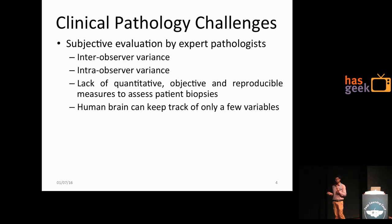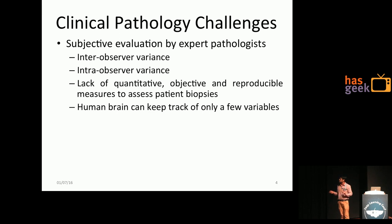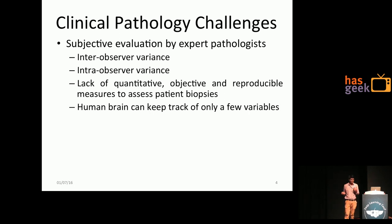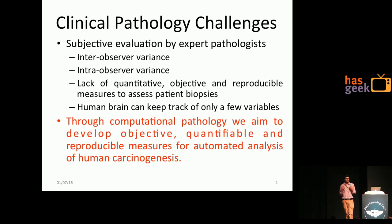Clinical pathology has certain limitations, due to which computational pathology is required. The foremost limitation is inter-observer variance: if the same tissue section is observed by multiple pathologists, they might differ in their opinions, and data exists to support this. There is also intra-observer variance, meaning that if the same pathologist is given the same pathological tissue at different time instances, their opinion may vary. It's not about expertise — it's a limitation of the human brain, which can only track a few variables over a limited time frame. We need quantitative, objective, and reproducible measures.